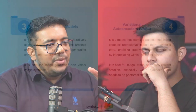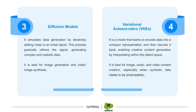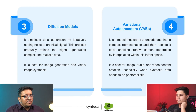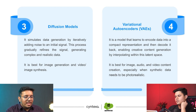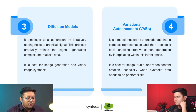Then we have diffusion models. In a diffusion model, a particular random image is taken and we keep adding new signals and pixels to it until a realistic image has been created. There is a complete neural network verifying whether that image is realistic or not. Diffusion models are primarily used for image generation and video image synthesis.